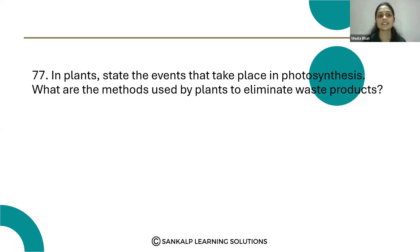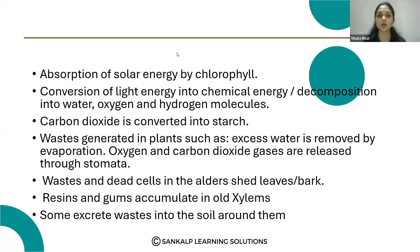Let's see question number 77: In plants, state the events that take place in photosynthesis. In plants there are three major steps in photosynthesis. The first step is absorption of solar energy by chlorophyll, where sunlight is absorbed by the chlorophyll pigment.